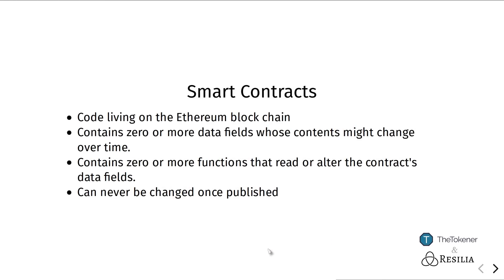On top of this blockchain network on Ethereum, we are able to execute what is known as smart contracts. They can be understood as pieces of program code that live on top of the Ethereum blockchain. A smart contract basically consists of two parts: it might contain a couple of data fields, which are basically containers that hold information, and what value is stored in there might actually change over time. The smart contract might also contain functions that read the values currently stored in the data fields or alter what value is stored in there.